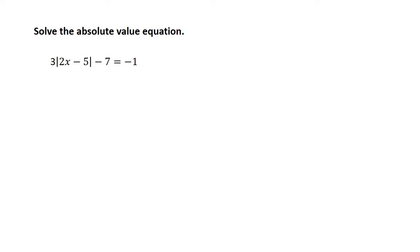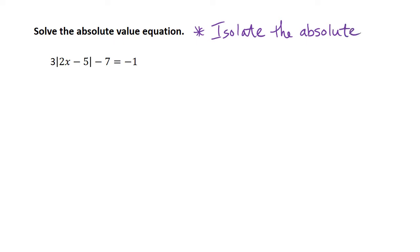When we're solving absolute value equations, it is important that we always isolate the absolute value before we actually use those rules. So isolate the absolute value before we try to break it into the two scenarios of being on the left side of zero and on the right side of zero.